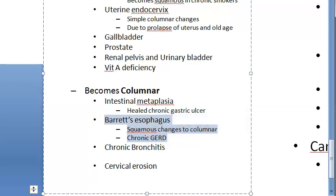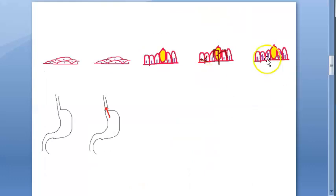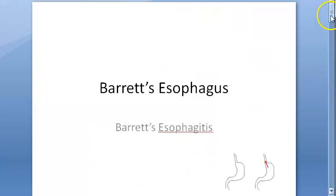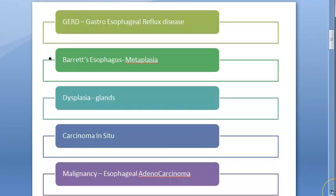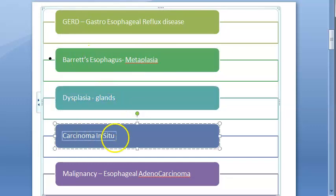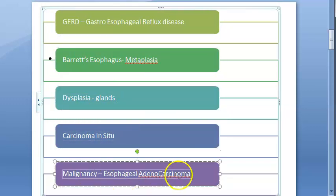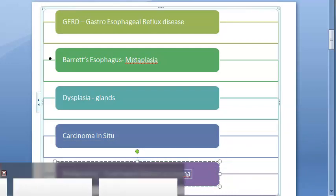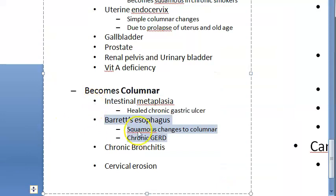Reviewing the Barrett's esophagus progression: chronic GERD will cause metaplasia, then it will become dysplasia, then carcinoma in situ, and finally esophageal adenocarcinoma. That is why it is very important to know about Barrett's esophagus. Go and watch the Barrett's esophagus video if you want more detail.